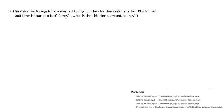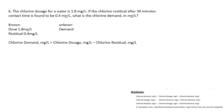Question number six: the chlorine dosage for a water is 1.8 mg/L. If the chlorine residual after 30 minutes contact time is found to be 0.4 mg/L, what is the chlorine demand? You dosed at 1.8 mg/L and after 30 minutes you're left with 0.4 mg/L. The demand formula — chlorine dosage minus chlorine residual — gives 1.8 minus 0.4, a demand of 1.4 mg/L. After 30 minutes of contact time, 1.4 mg/L of chlorine was destroyed, leaving 0.4 mg/L as residual.